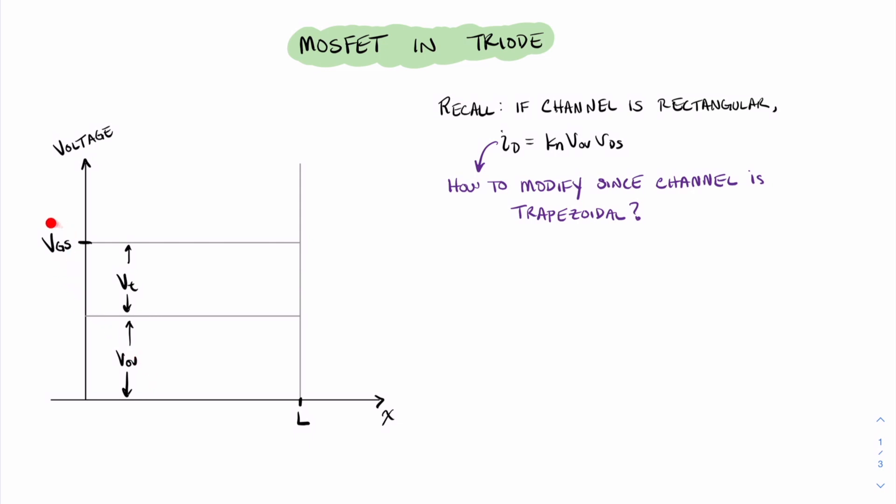We know that we have applied a value VGS to the device. Part of that VGS first has to overcome the threshold in order to move the carriers away in the channel. Then above that threshold, we have our overvoltage. This overvoltage is what gives rise to the channel shape.